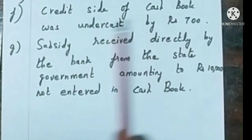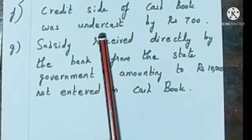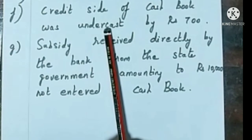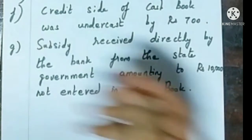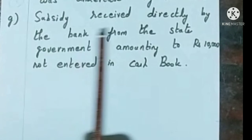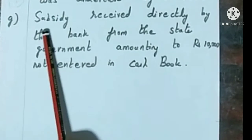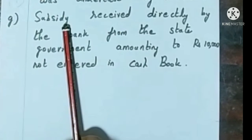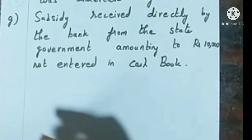The credit side of the cashbook was undercast by Rs. 700. This means the outflows column is undercast, so the cashbook balance has increased — we have to add Rs. 700. Subsidy received from the government amounting to Rs. 10,000 has been recorded in the passbook but not in the cashbook, so the cashbook balance has reduced — we have to deduct Rs. 10,000.